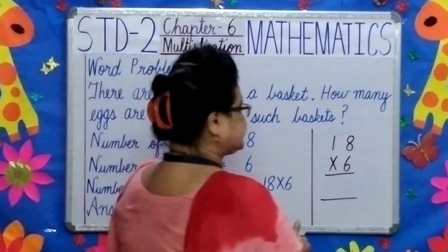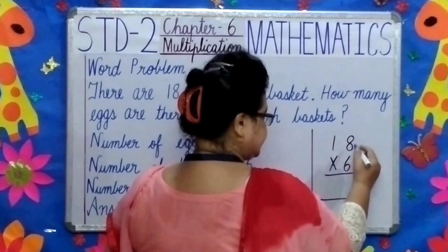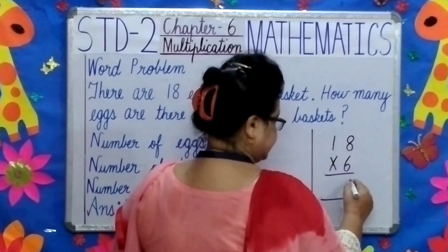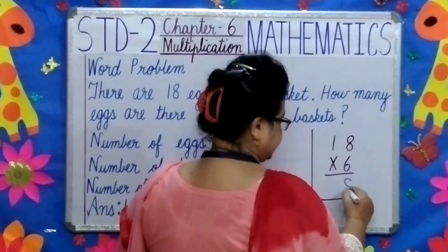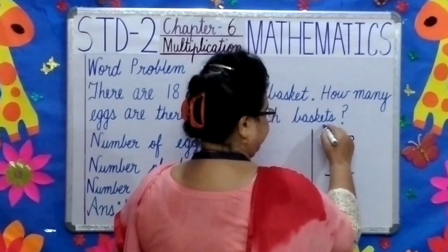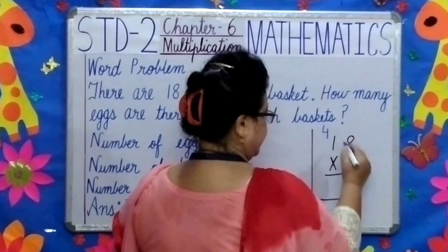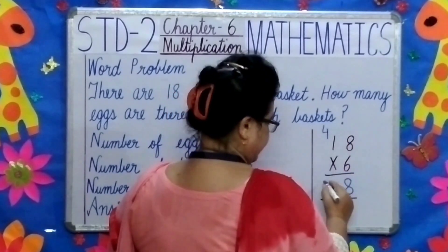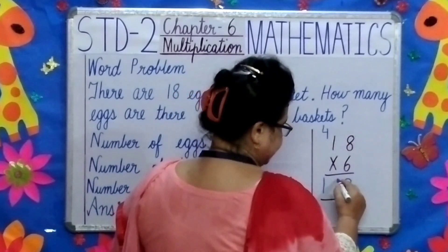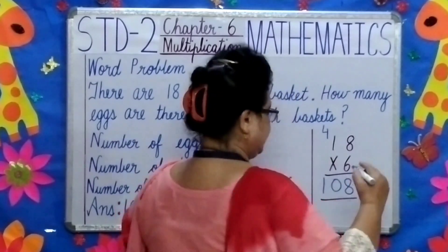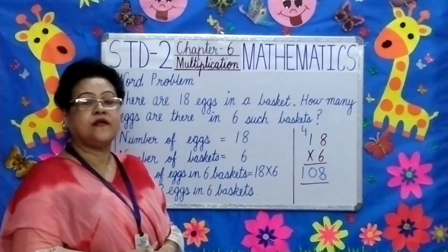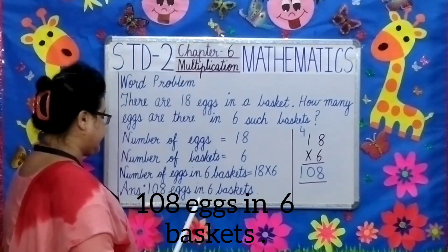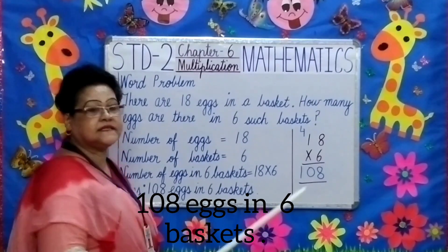Now let us do the sum over here. 6 eights are... What are 6 eights? 48. So I will write 8 over here and I will put 4 on the top. 6 ones are 6 plus 4. We get 10. So what is your answer children? 108 eggs in 6 baskets.